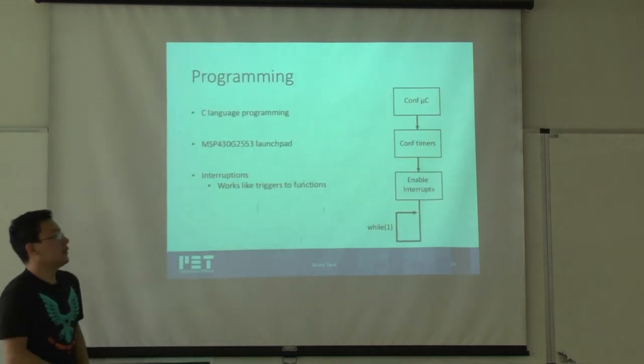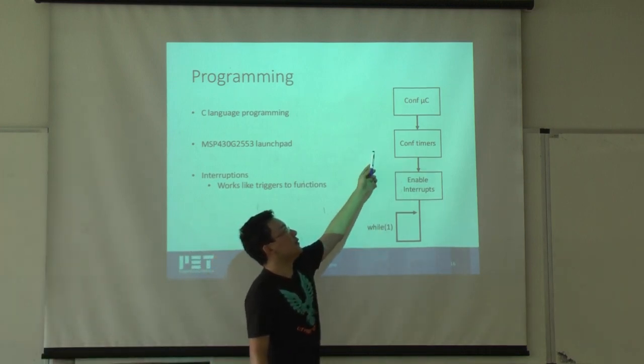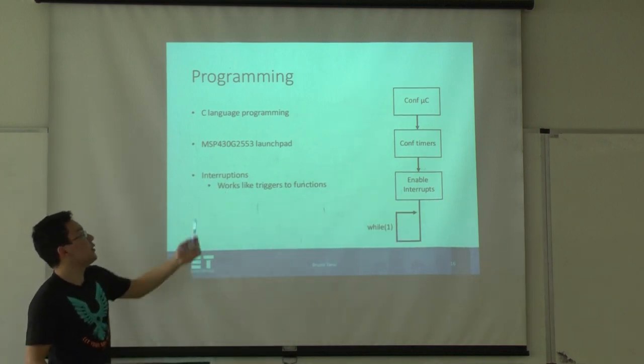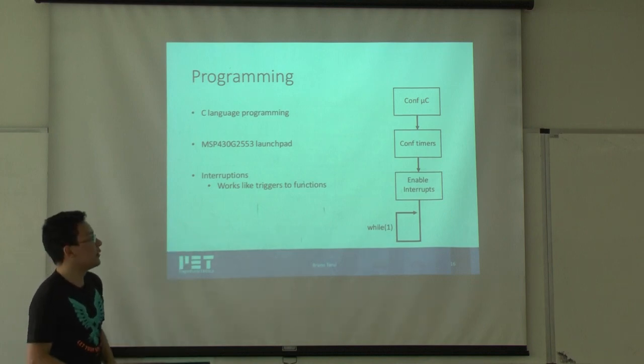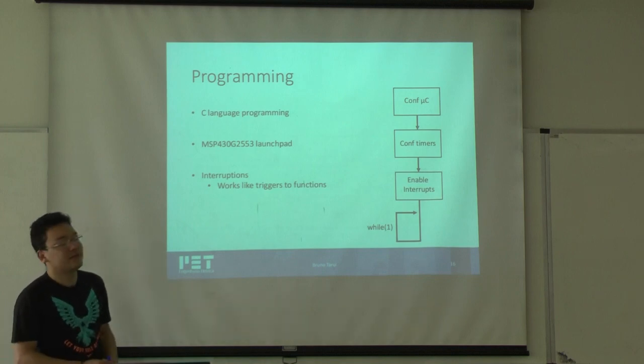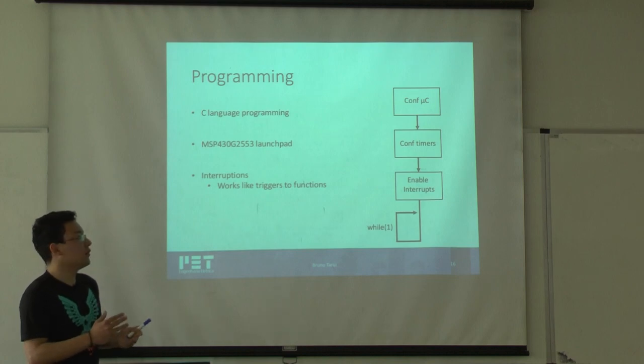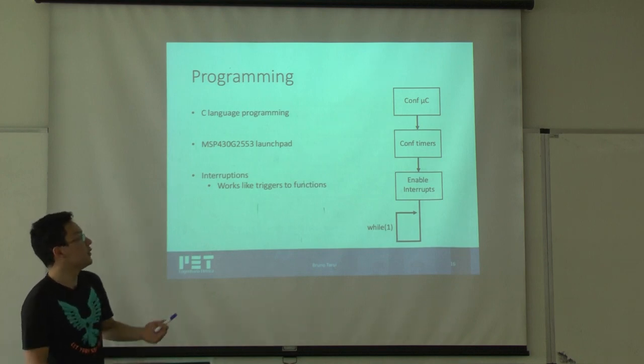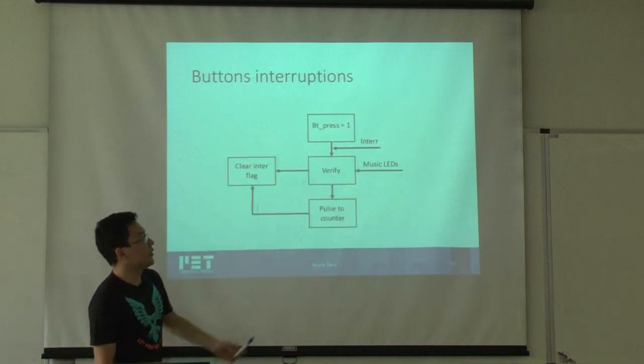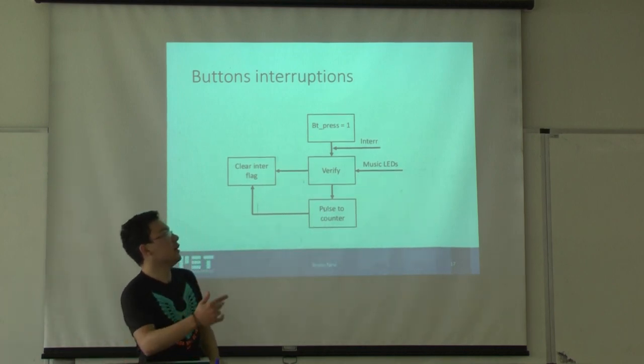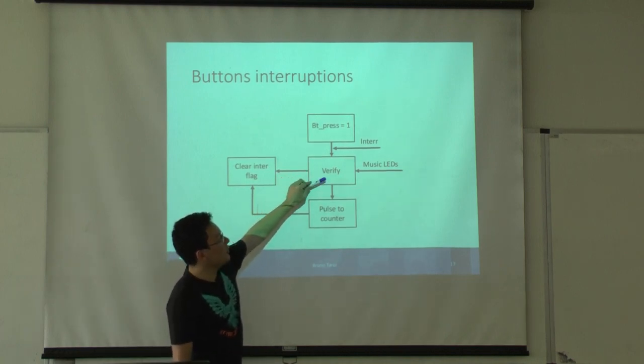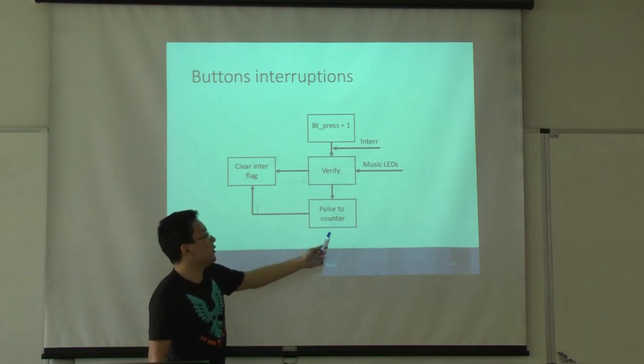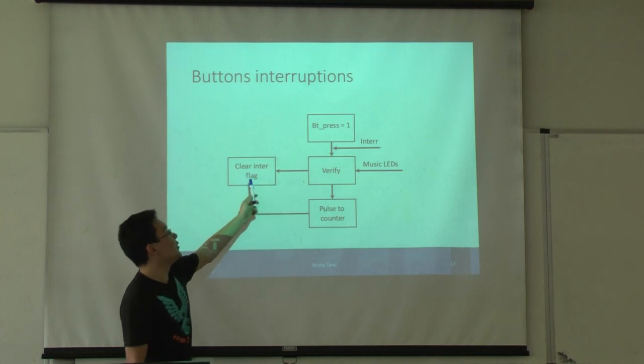Now the programming of the microcontroller. The programming is quite simple. Here is the main function. Just a function to configure the microcontroller, another function to configure the timers, and then interrupts. I use C language programming on MSP430. What are the interruptions? Interruptions work like triggers for functions. The microcontroller will be watching some parts, and when some variation occurs in that part or that register, the next instruction of the microcontroller will be to start a specified function. This is the button interruptions and how they work. When you press the button, it will be able to interrupt. The interrupt will activate the verify function that verifies if the button pressed is the same and matches with the LED that is activated. If they match, the microcontroller will send a pulse to the counter to increase your score. If it doesn't match, just clear the interruption flag and back to the main function.